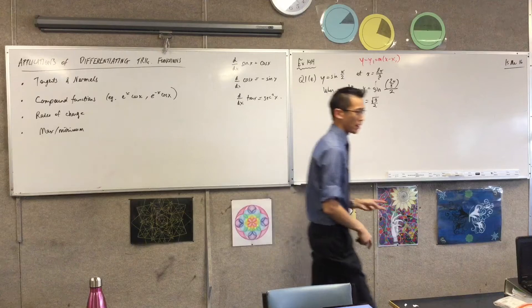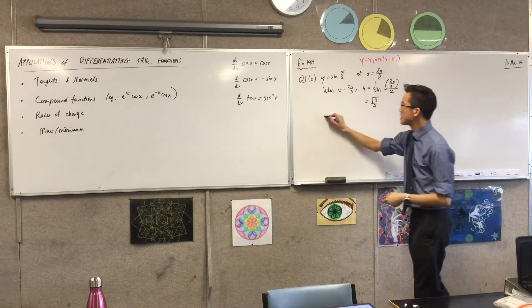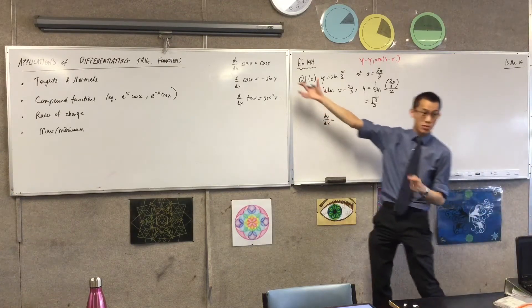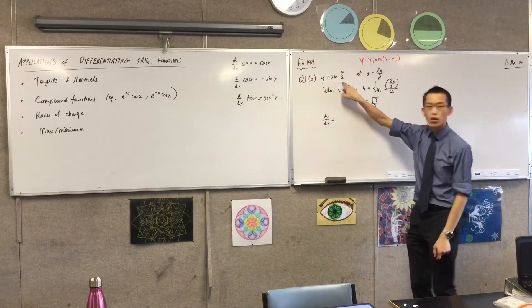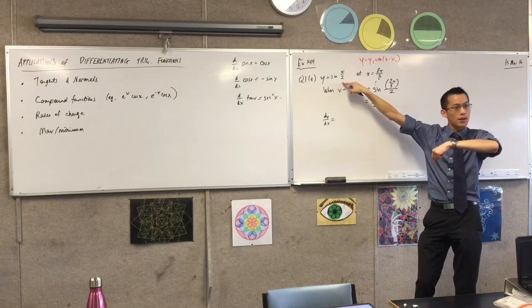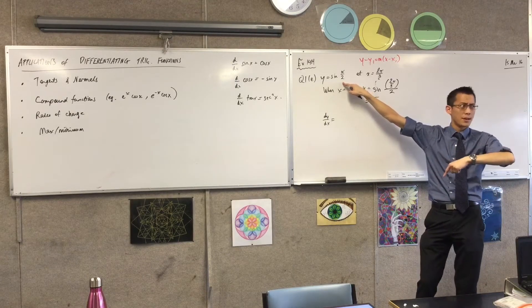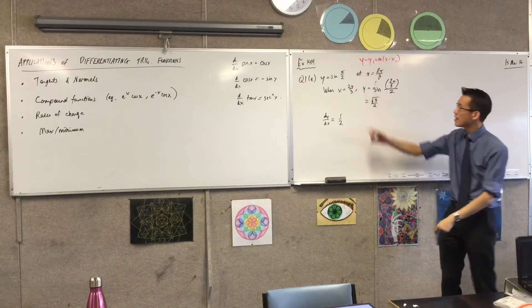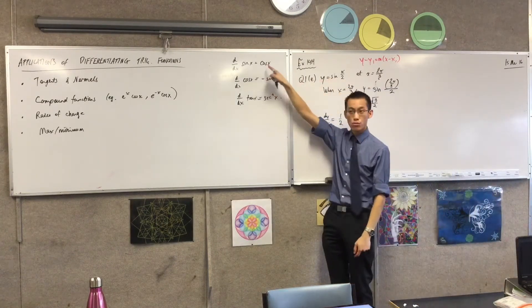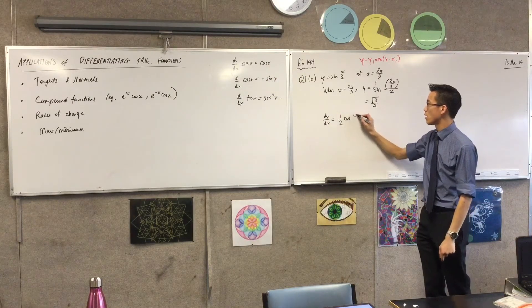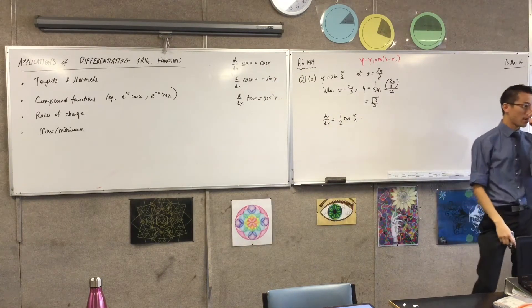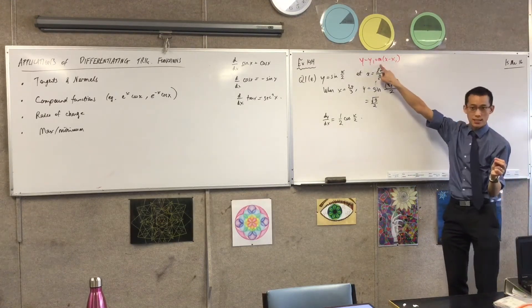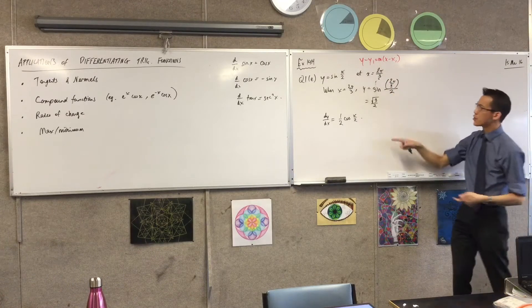Now I've got to get the gradient. dy/dx — this is about as simple as it gets without just quoting results. You've got the chain rule happening here, so I need the derivative of the inside function. The derivative of the inside is a half. Then I do the outside: sine turns into cosine. So I get ½cos(x/2). That's the gradient function, not to be confused with the gradient — the gradient is at a particular point.